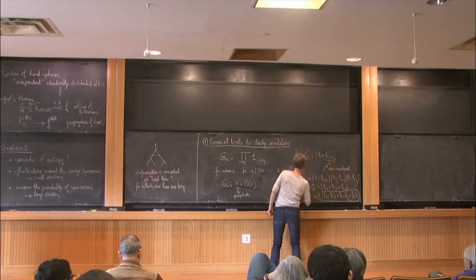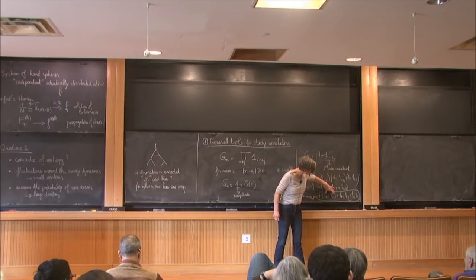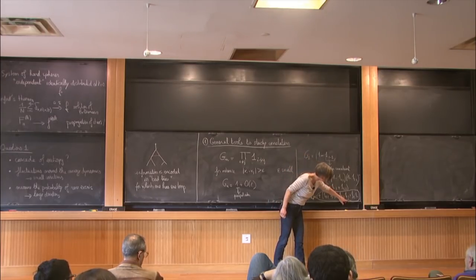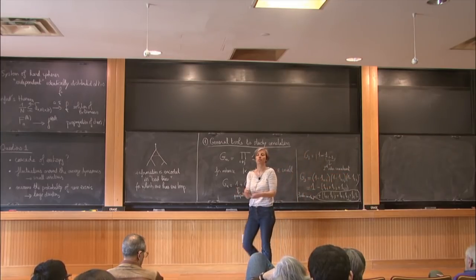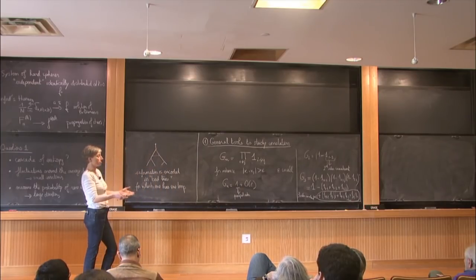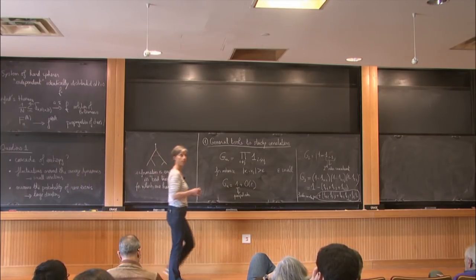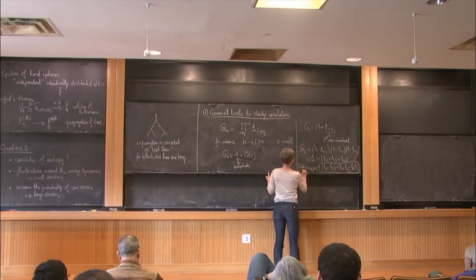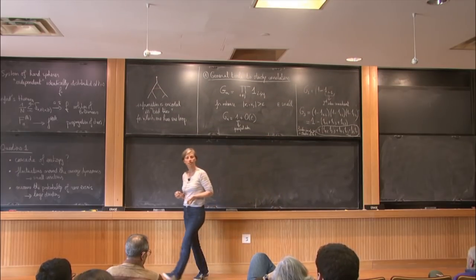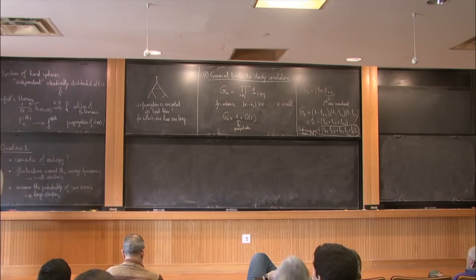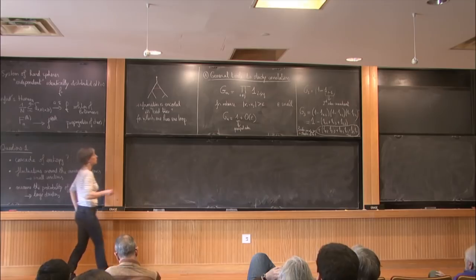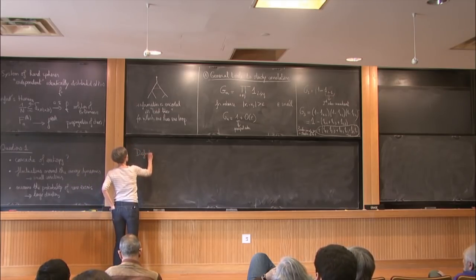All these terms where you have a connection between particles 1, 2, and 3 will be of order epsilon squared, because you have two constraints that the particles have to be close to each other. All this together will be called the third order cumulant. You see that there are different terms — products of only two quantities, and also the product of three — but everything is of the same order. The notion of cluster is important: everybody is in the same cluster of size three.